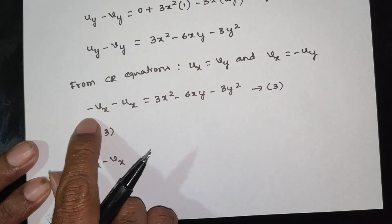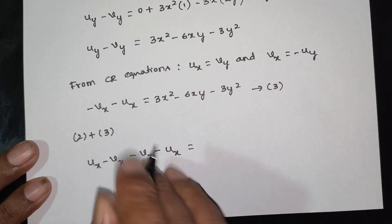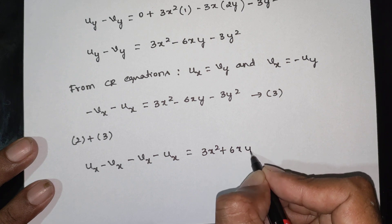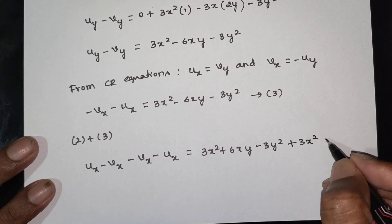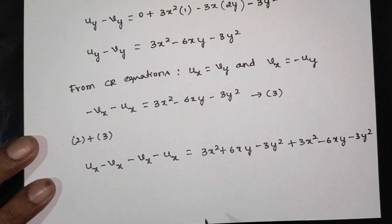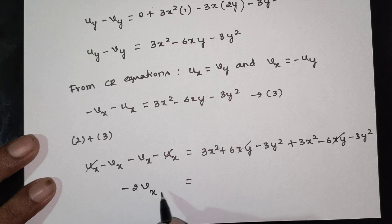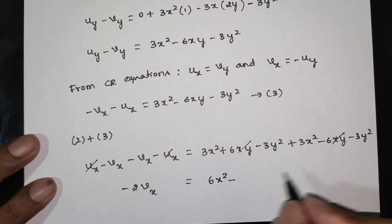Now ux minus vx: on the left hand side, sign change gives plus right hand side 3x squared plus 6xy minus 3y squared. And 3x squared minus 6xy minus 3y squared — some terms will cancel. ux minus vx minus (ux minus vx): minus 2vx, and 3x squared plus 3x squared gives 6x squared minus 6y squared.